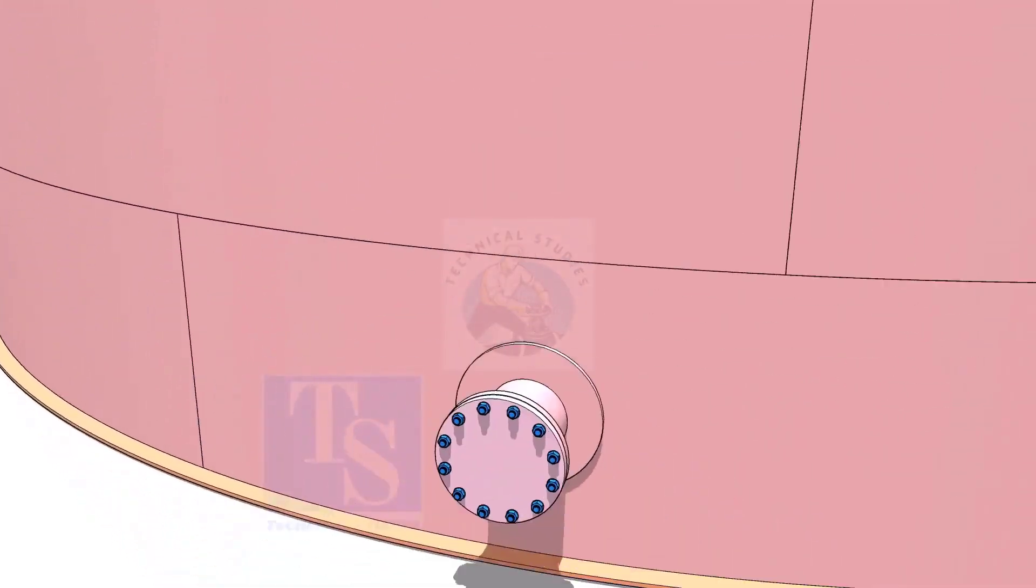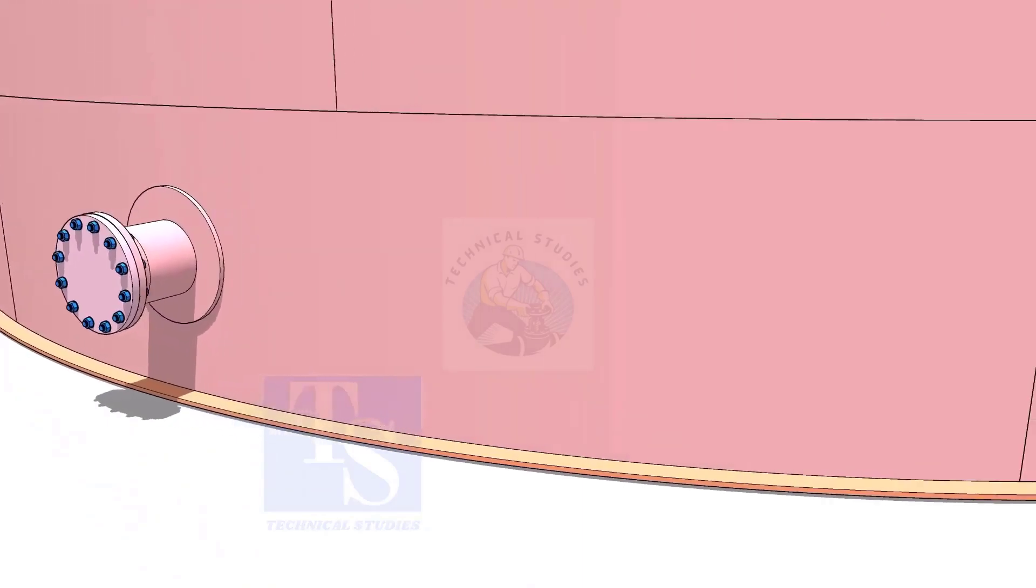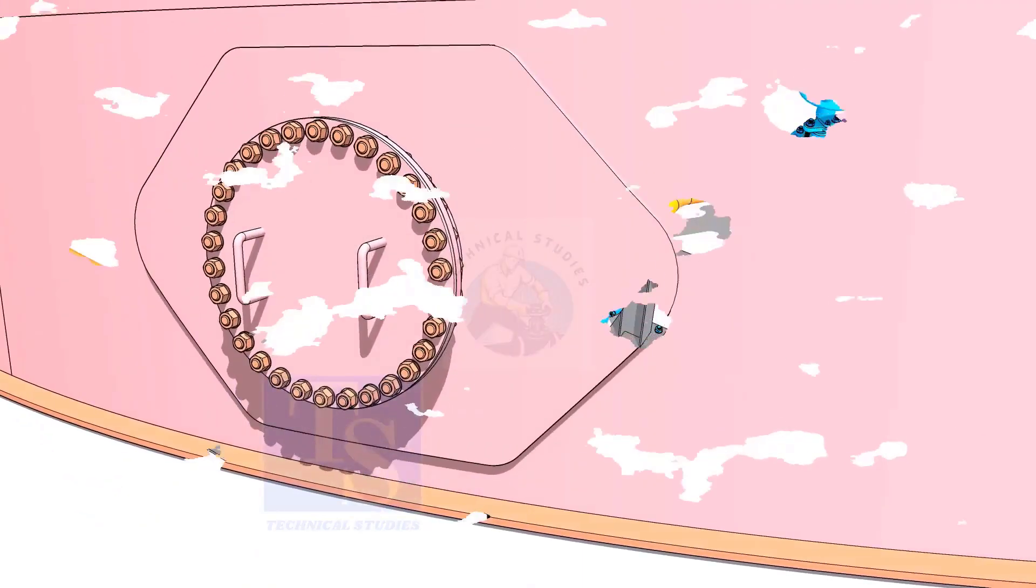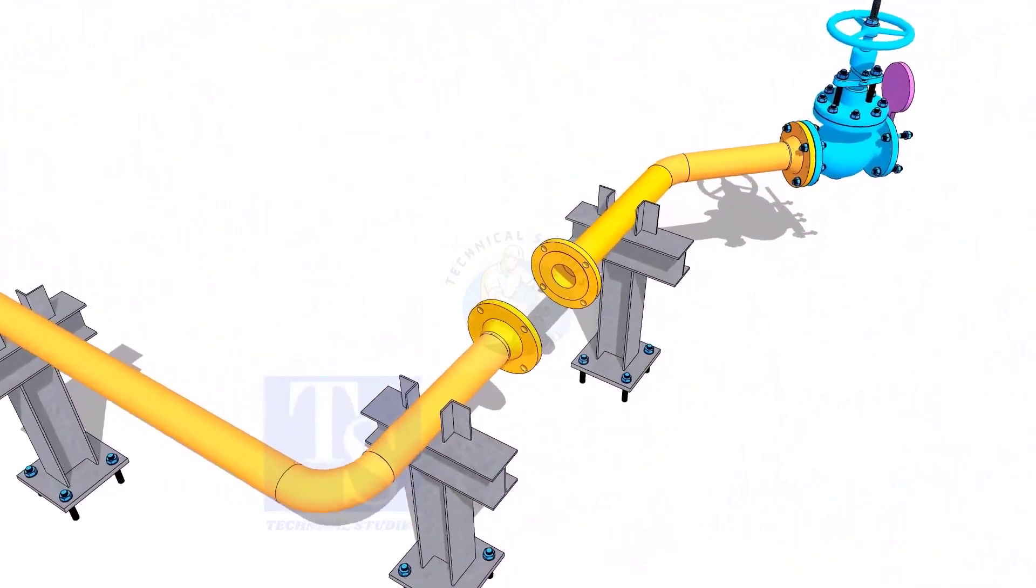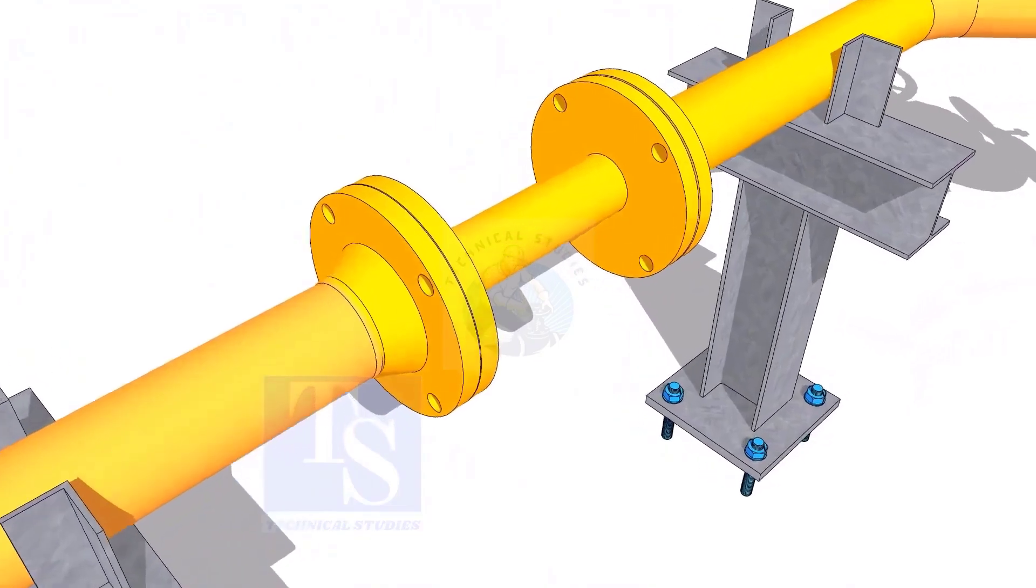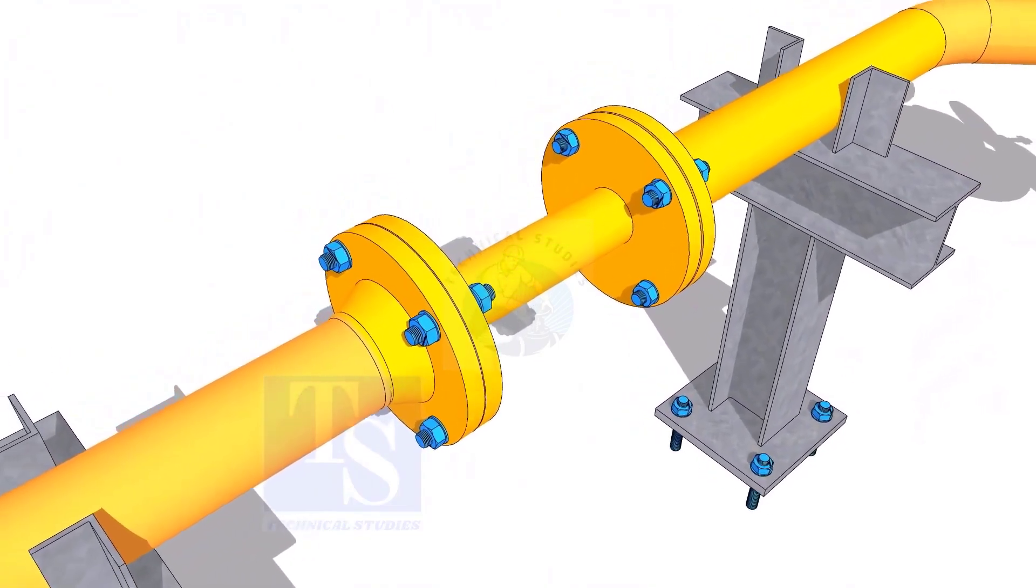Plate flanges are used for low-pressure services or to blind the nozzles of vessels, tanks, etc. for hydrotest purposes. Other use of plate flange is making temporary spools to replace valves and equipment on a piping system.